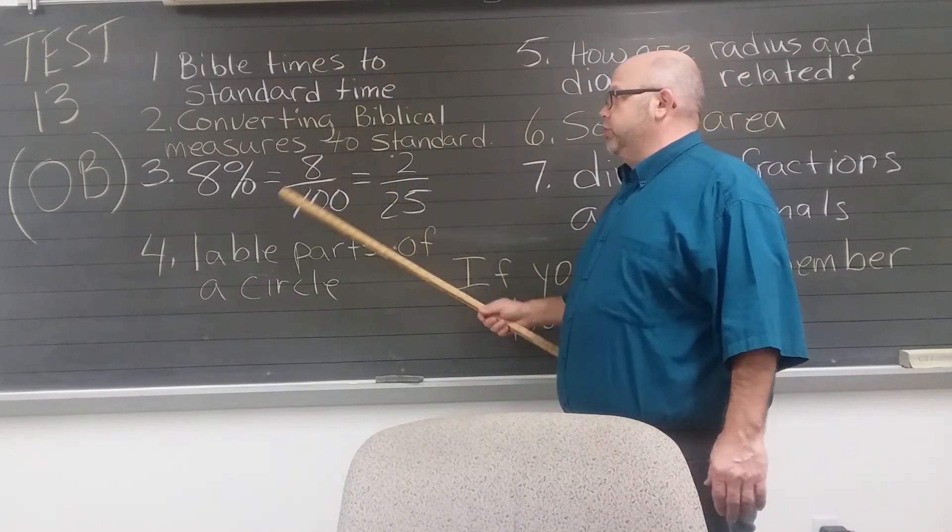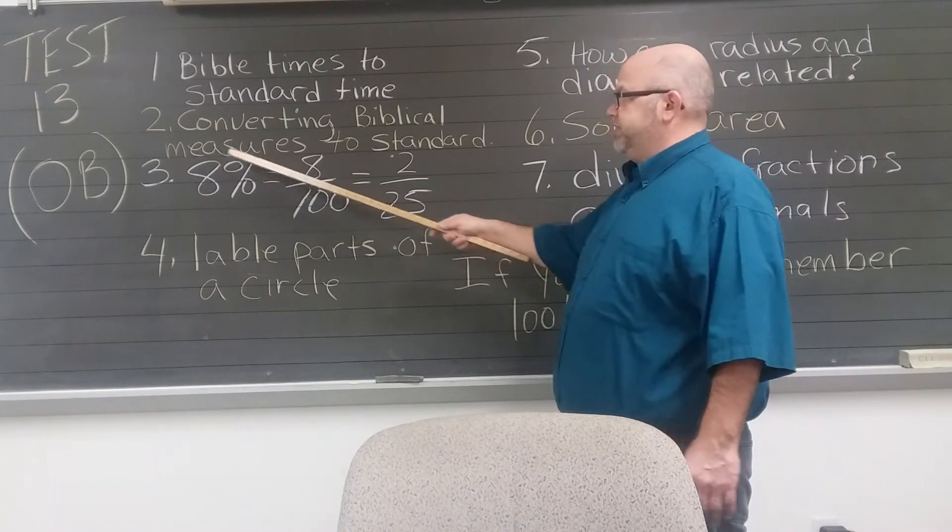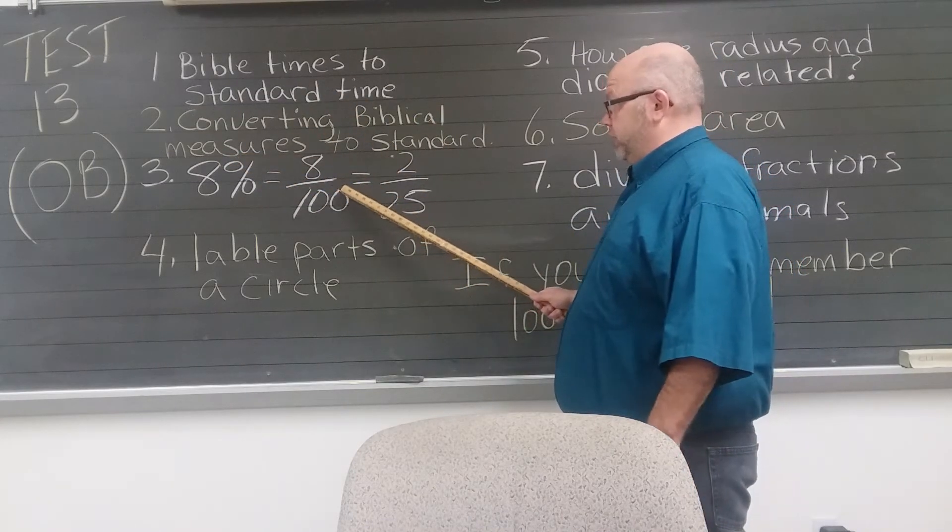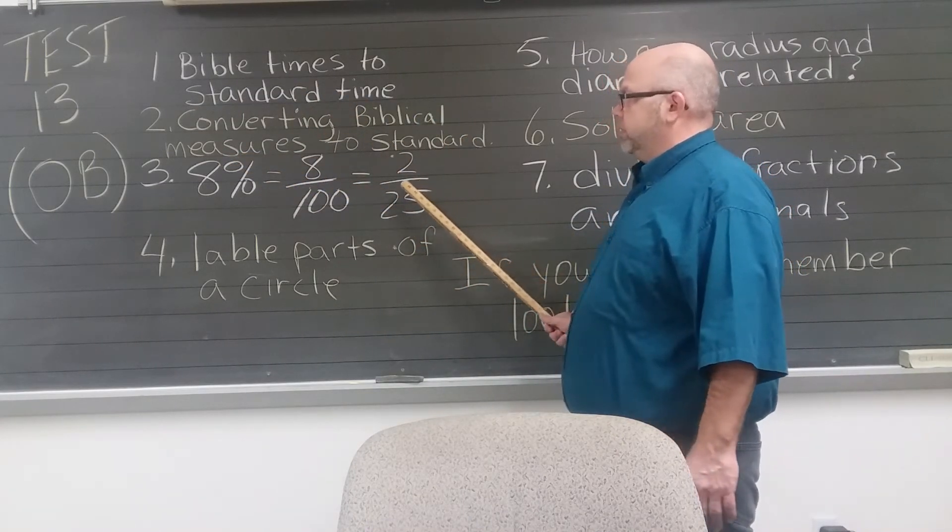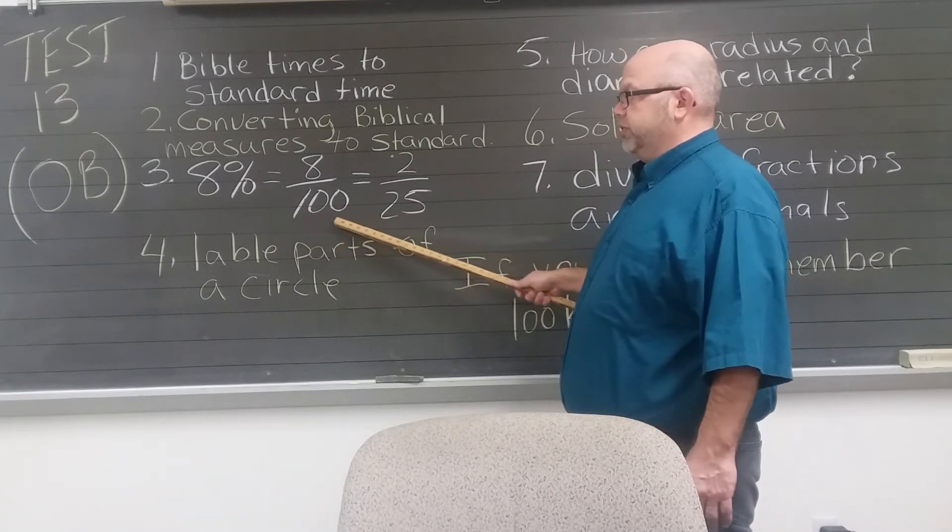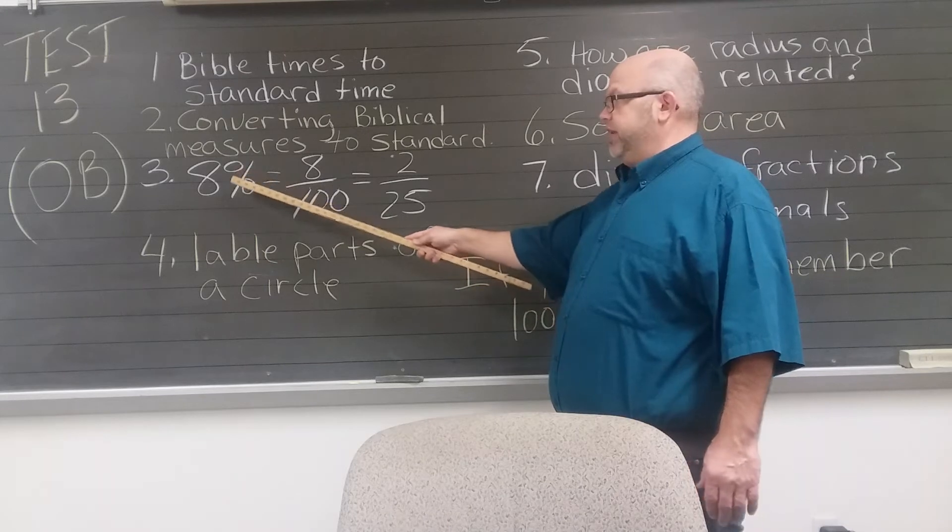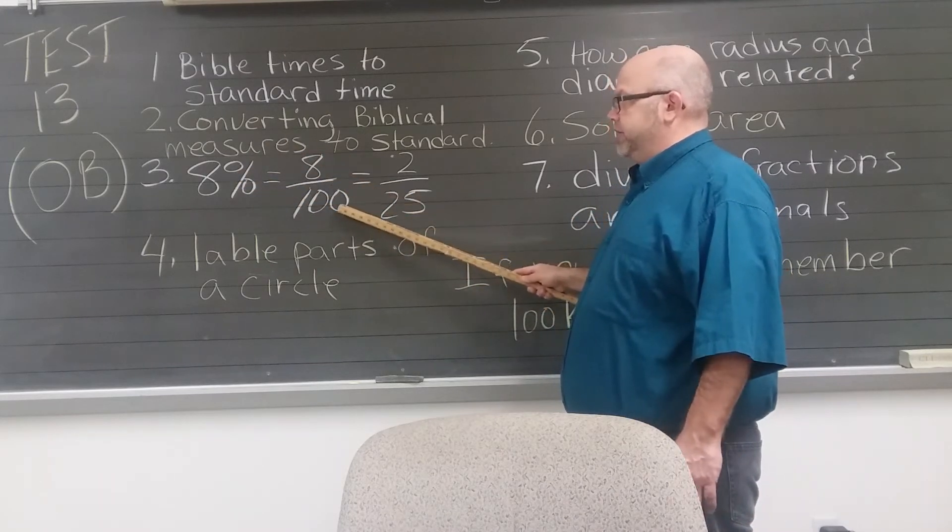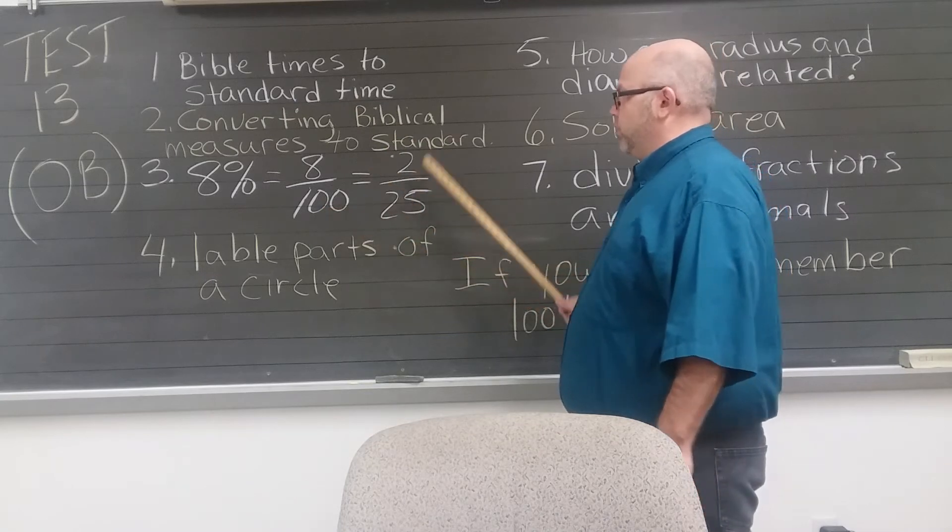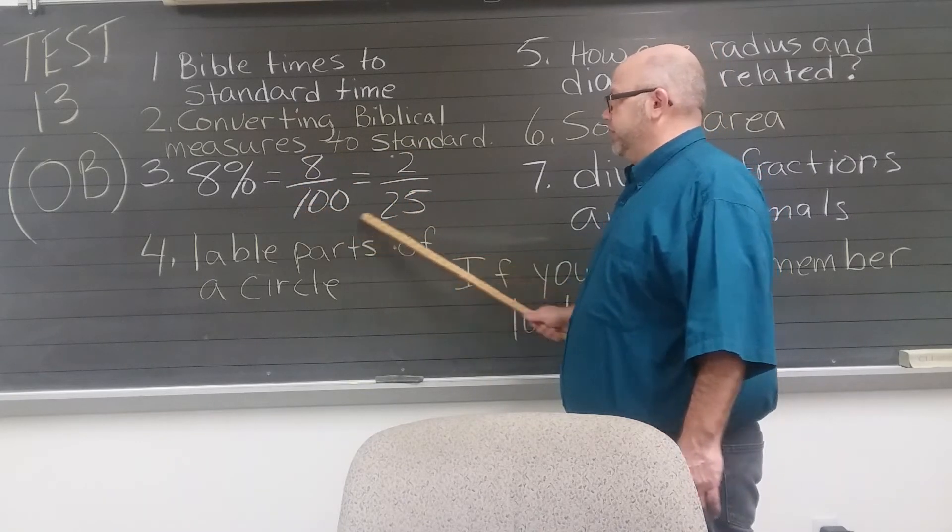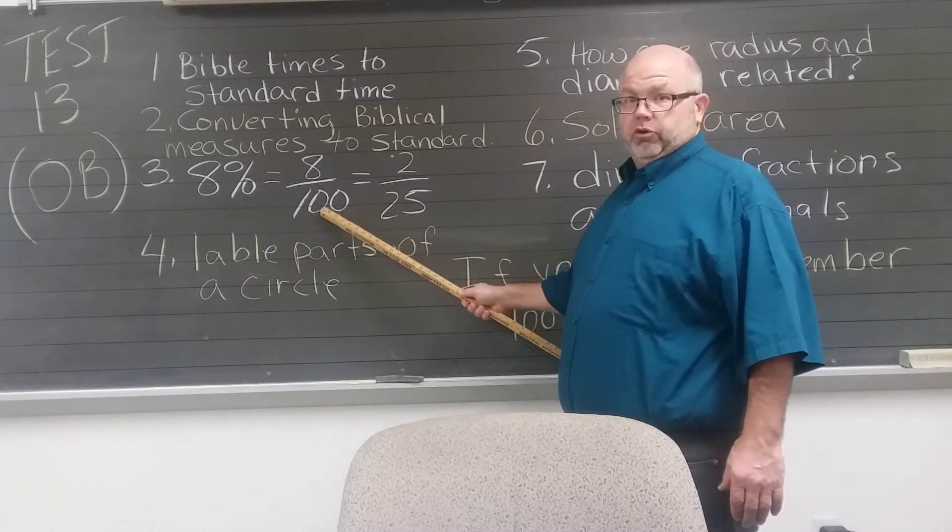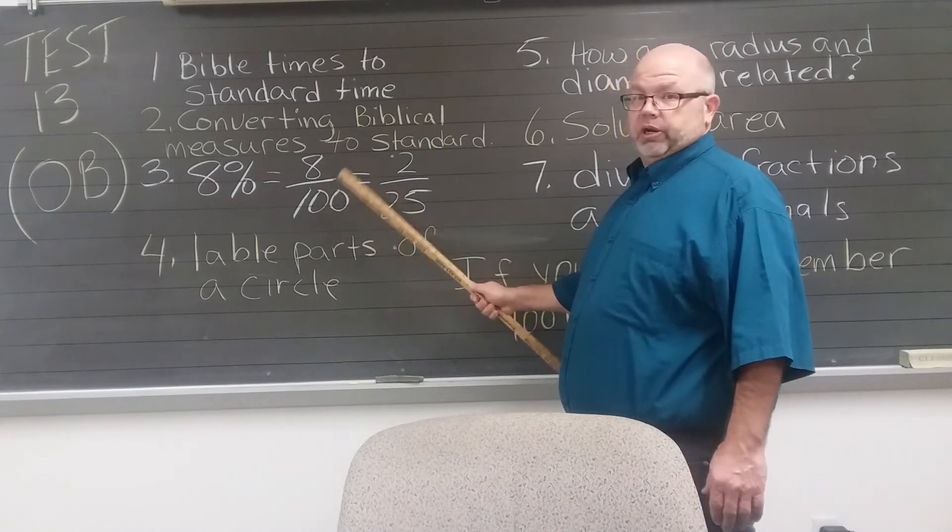There will be a part where you have a percent on the test and you need to change the percent to a fraction and then reduce it. The denominator is always one hundred. Eight percent means eight over one hundred, reduce that. Eight divided by four, a hundred divided by four, two over twenty-five. So you will need those two answers looking like that. The denominator of the original fraction is always 100.